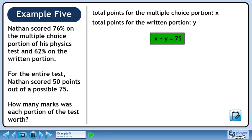The total points for the multiple choice section is x and the total points for the written section is y. There are 75 points in total on the test, so x plus y equals 75.